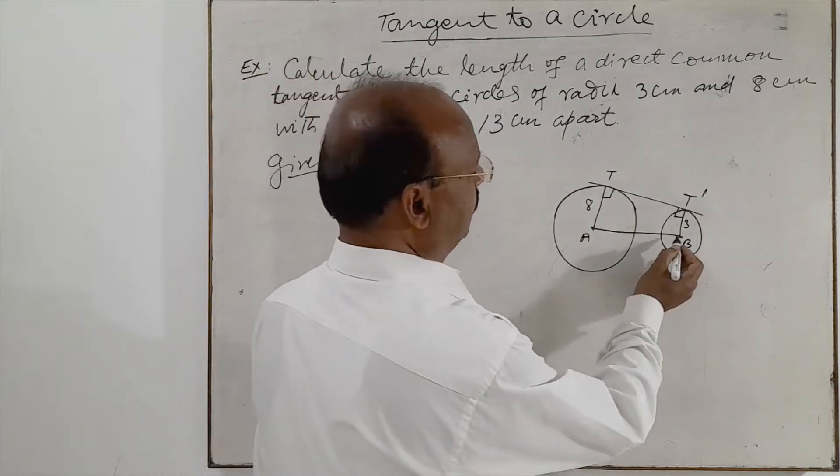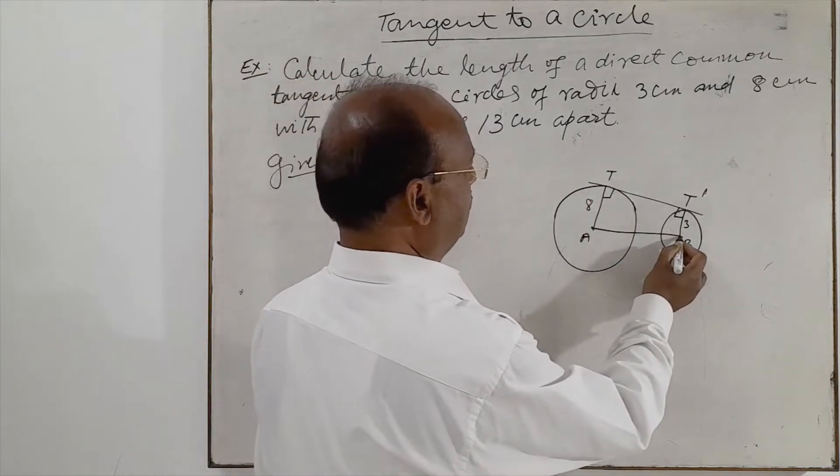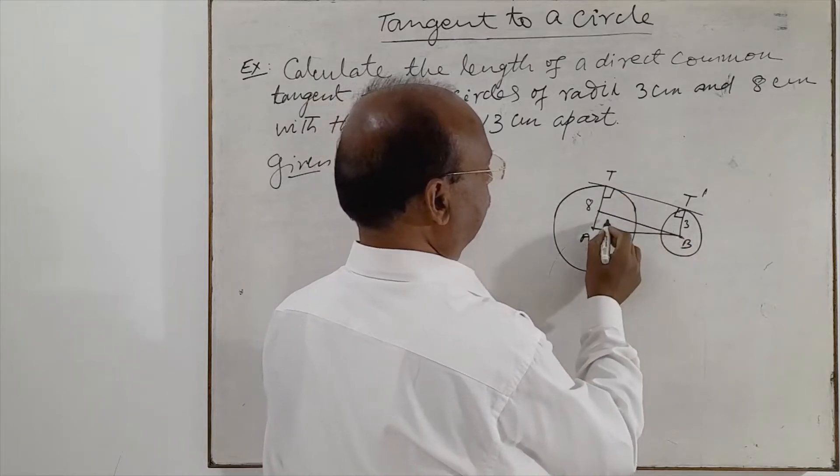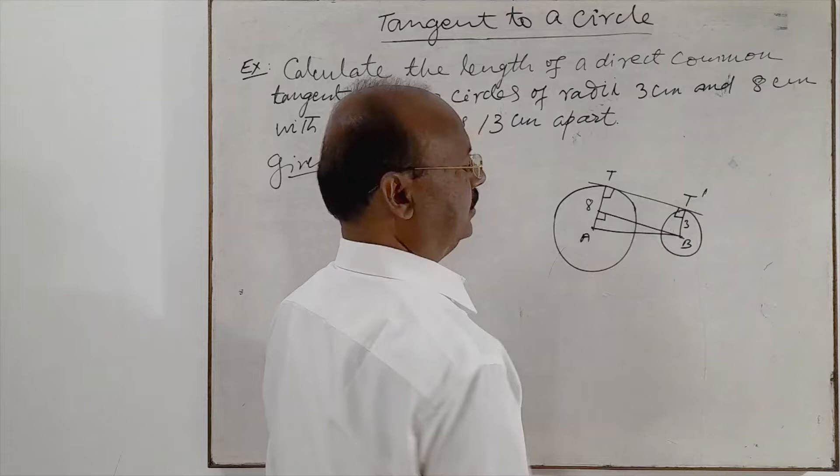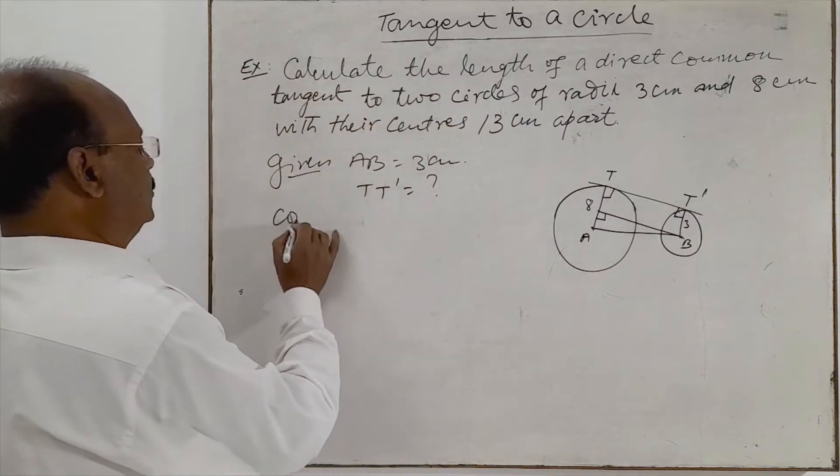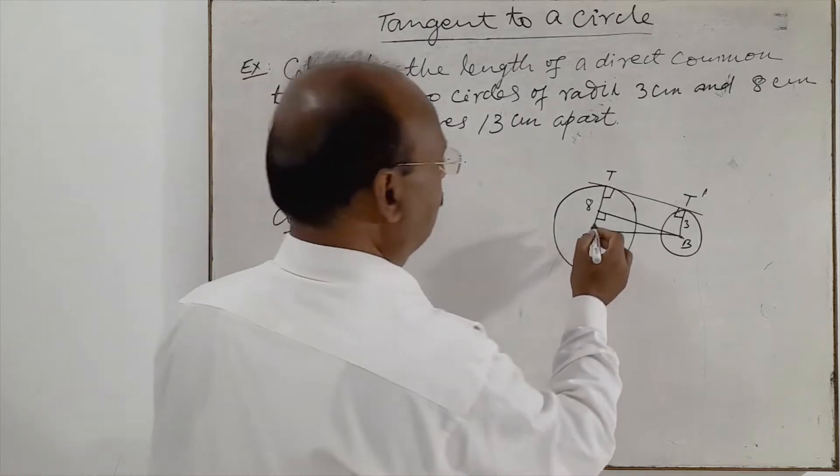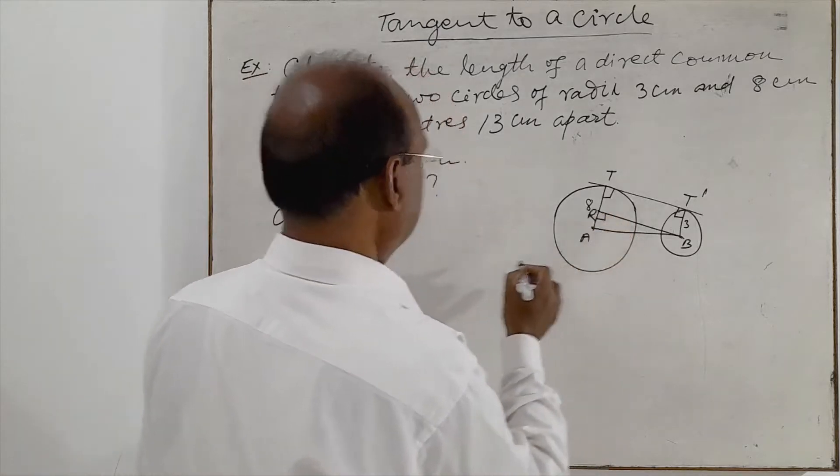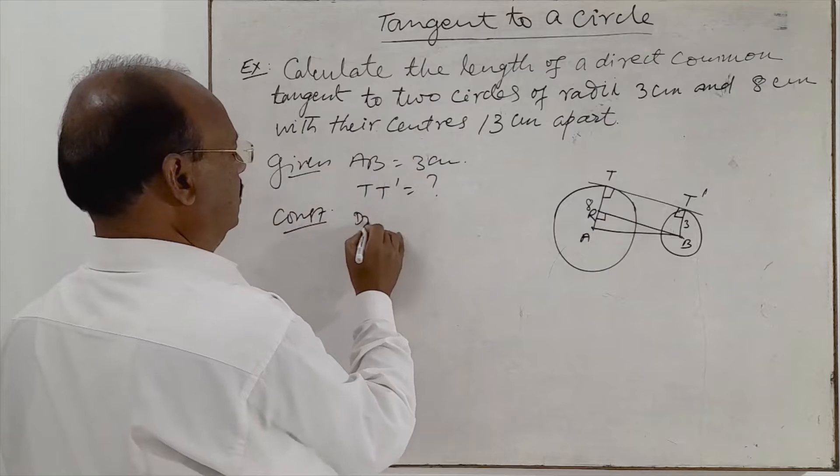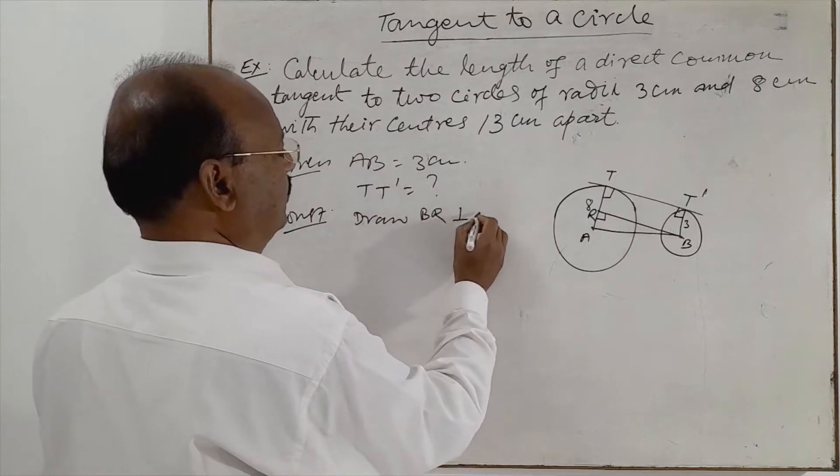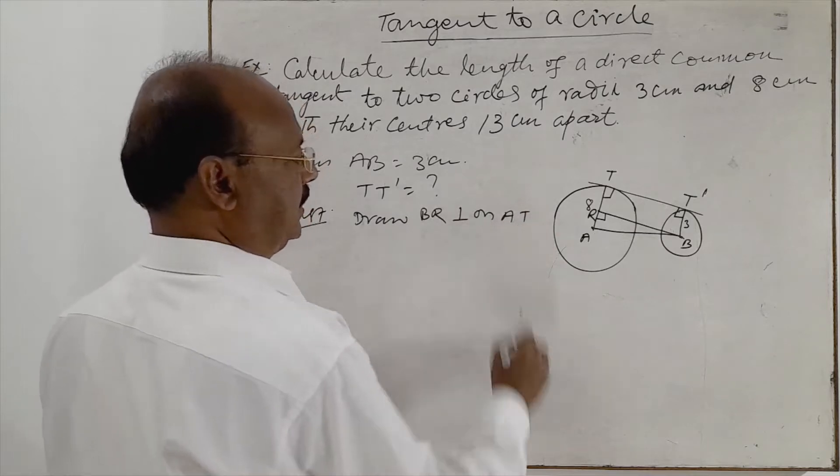Here we will draw perpendicular from this point B to AT like this. This is 90 degrees. So this is the construction. Suppose we are writing here R. Draw BR perpendicular on AT.